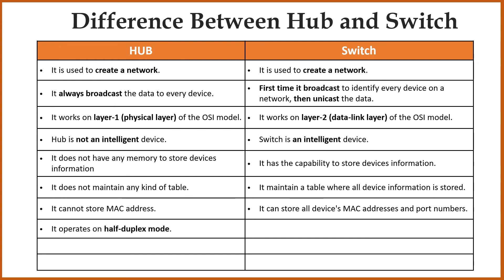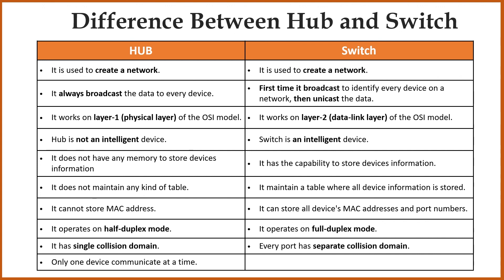Hub operates on half duplex mode because it has a single collision domain, meaning only one device can communicate at a time. Switch operates on full duplex mode because every port has a separate collision domain, so all the devices can communicate at a time.